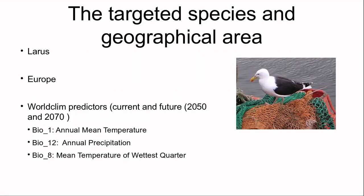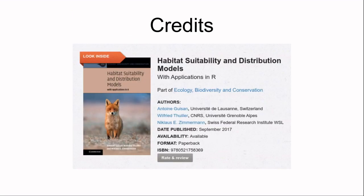Today we will model a couple of species from the Larousse family. We will look at European scale and work with annual mean temperature, annual precipitation, and mean temperature of the wettest quarter to explain the distribution of these species.